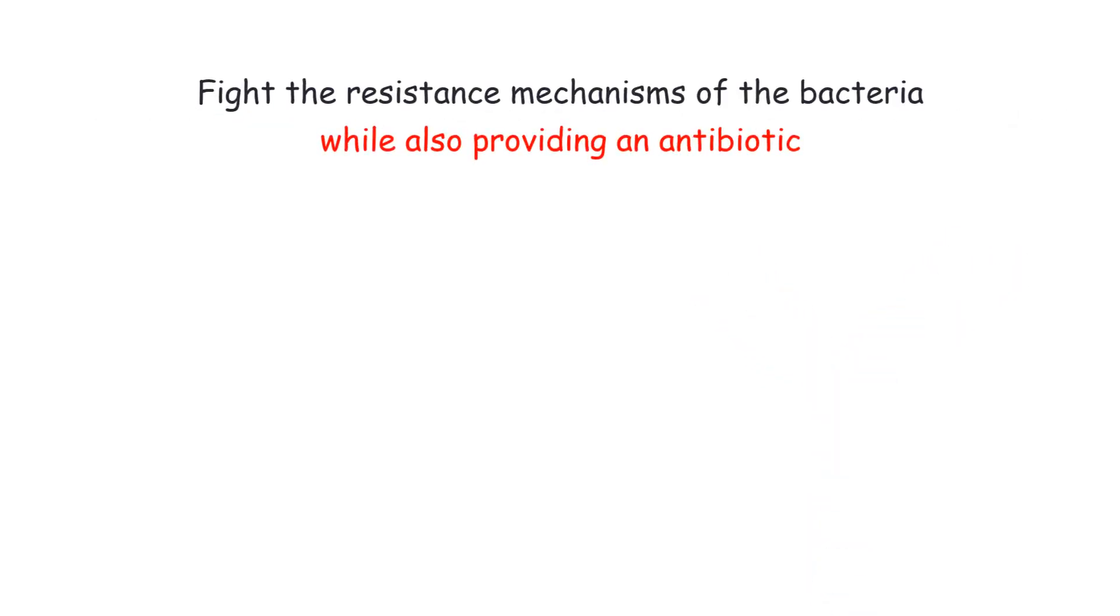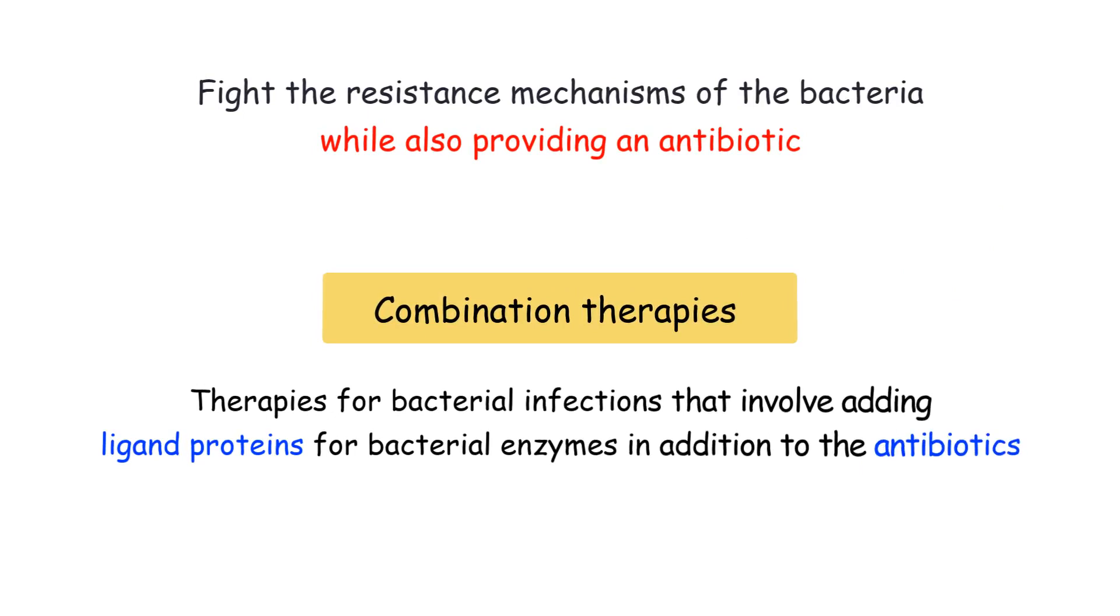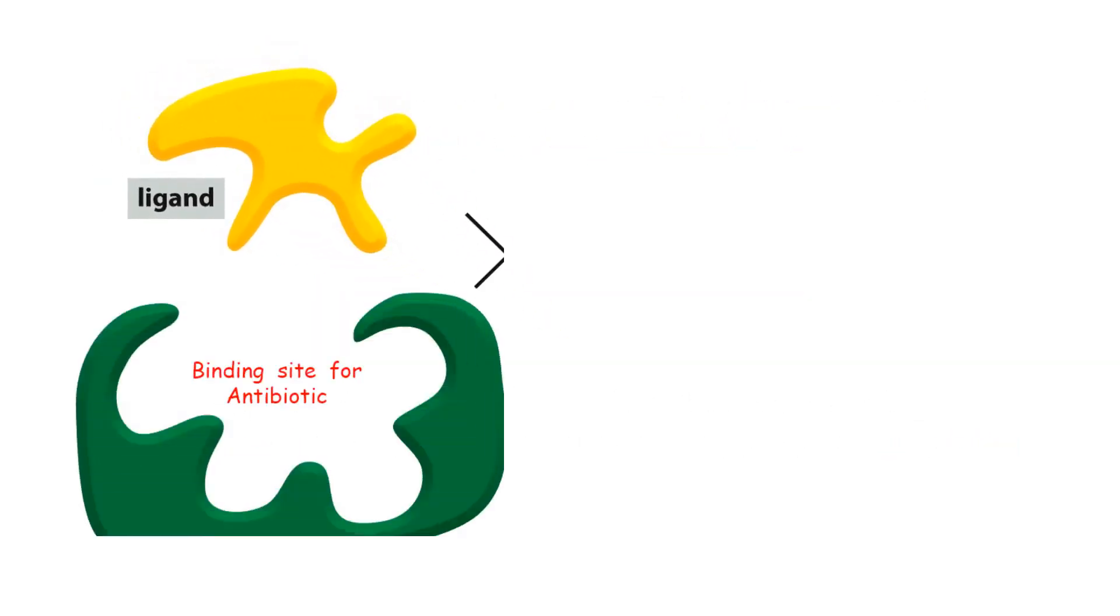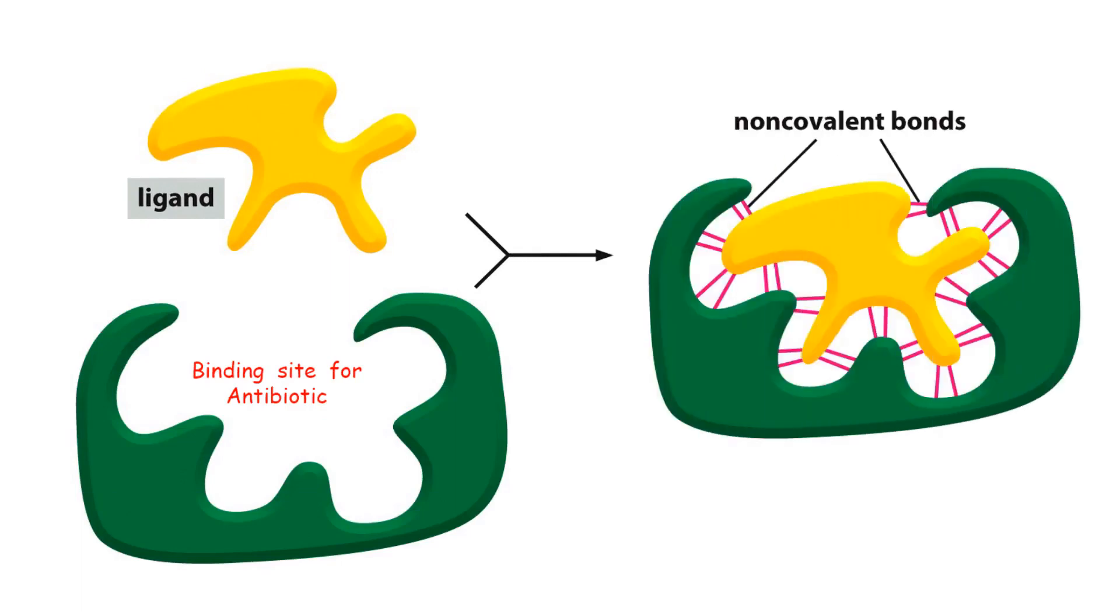Another treatment option is to fight the resistance mechanisms of the bacteria while also providing an antibiotic. Combination therapies are therapies for bacterial infections that involve adding ligand proteins for bacterial enzymes in addition to the antibiotics. For example, providing a ligand, meaning a protein that will bind to a bacterial enzyme such as a beta-lactamase, would cause the beta-lactamase to be bound to the ligand protein instead of the antibiotic.